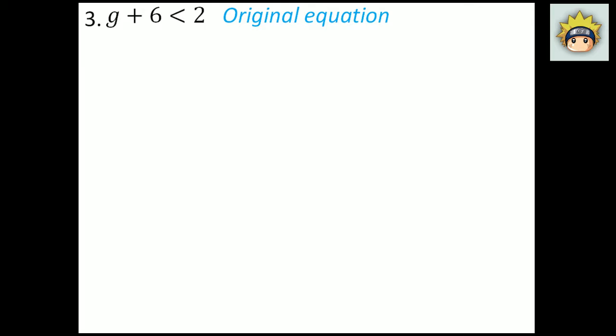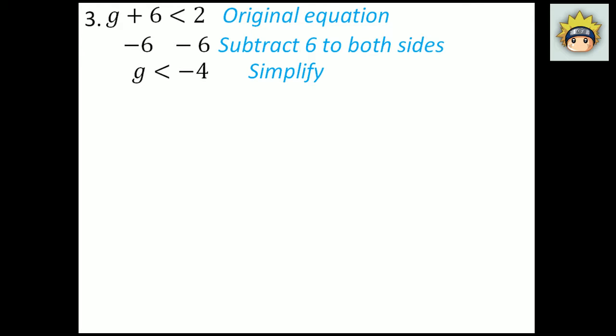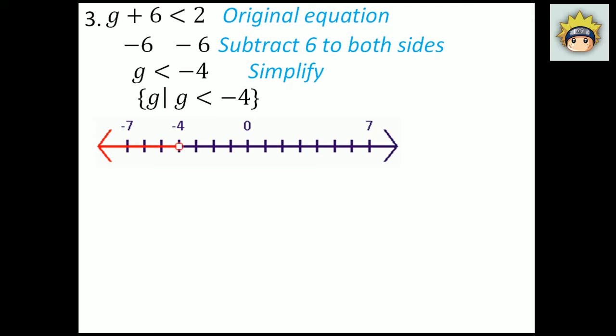Number 3. The original equation is g plus 6 is less than 2. To get g alone, use the inverse property of plus 6, which is subtract 6. Subtract 6 from both sides. What I have left on the left-hand side is g, and on the right-hand side is negative 4. So g is less than negative 4. In set builder notation: g, g is less than negative 4. It is open at negative 4 and goes to the left, because g is less than negative 4. So negative 5, negative 7 and so forth would work.